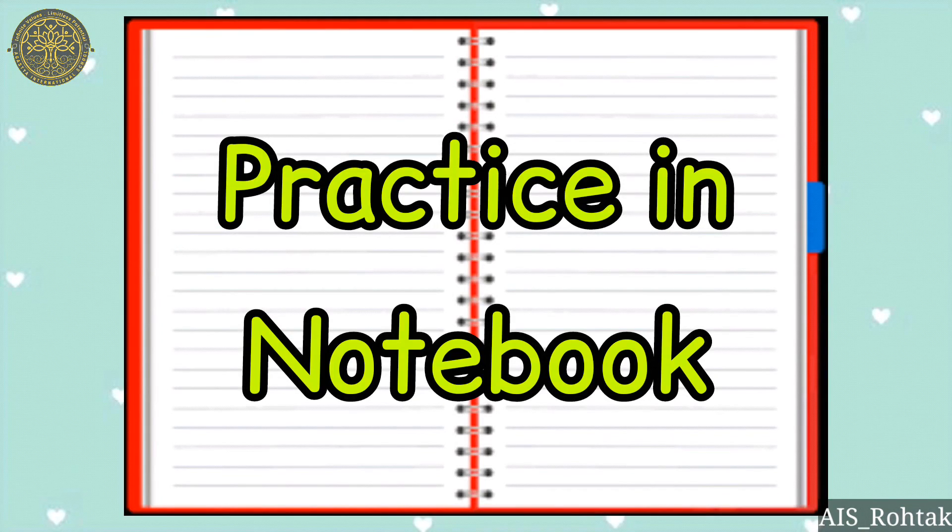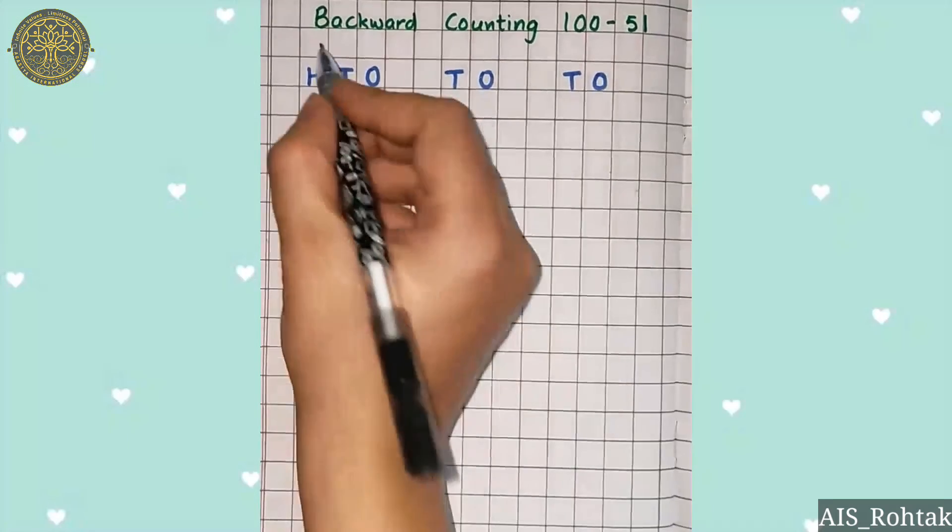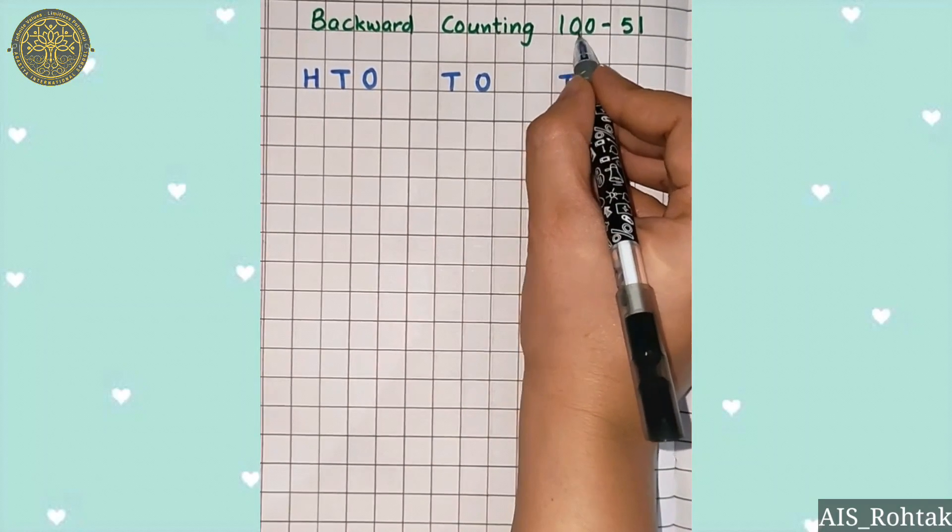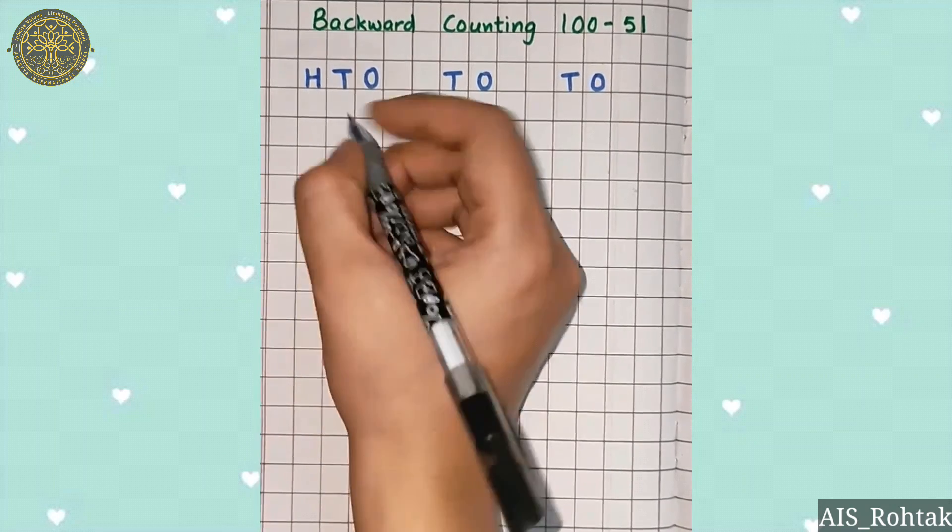Now we will practice writing backward counting from 100 to 51 in notebook. Let's start writing backward counting from 100 to 51. The number 100 will be written under 3 columns.